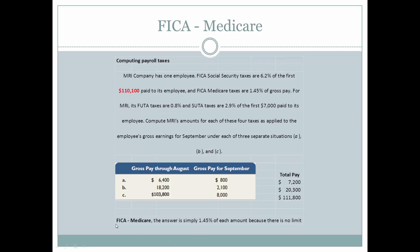For FICA Medicare, the answer is simply 1.45% of each amount because there is no limit. FICA Medicare taxes are 1.45% of gross pay, so that's a simple calculation across all three scenarios.